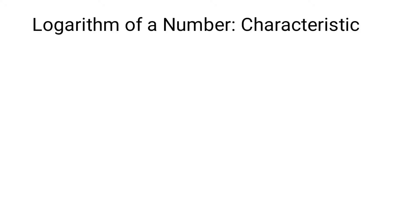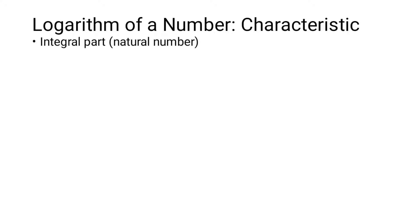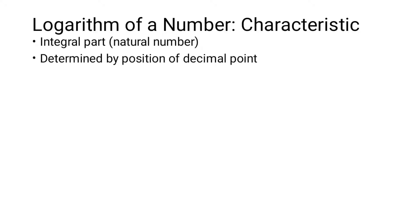When we find the logarithm of a number, there are two parts. One is the characteristic and another is the mantissa. The characteristic is the integral part of the logarithm of a particular number. It is determined by the position of the decimal point.